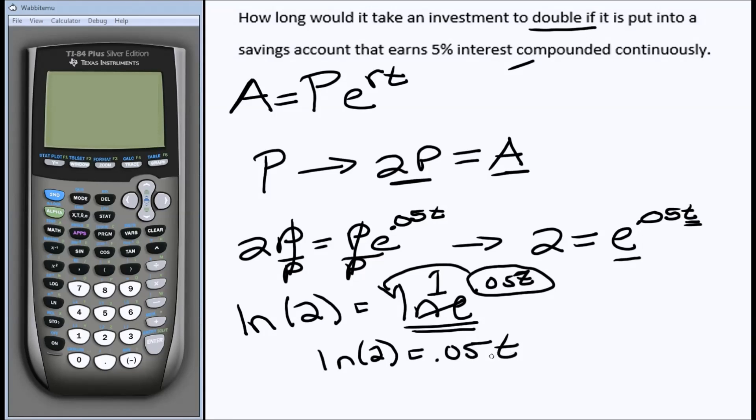Now, if I want to know what t is, all I have to do is divide both sides by this .05. And we get some answer.